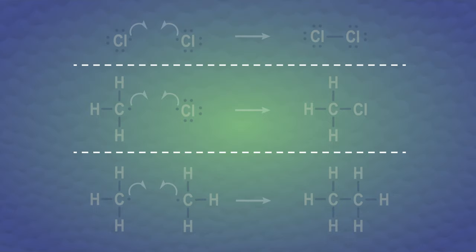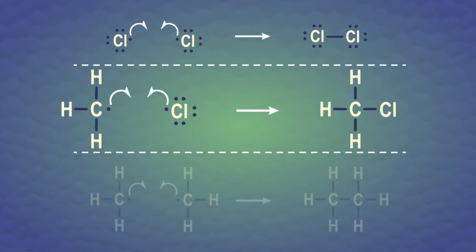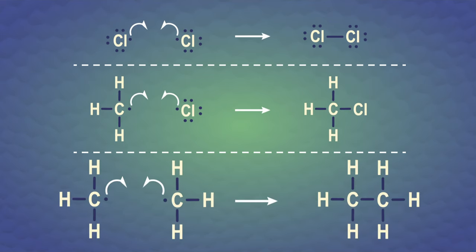Here, there are three possible termination steps. We can end with two chlorine radicals, or instead one methyl radical and one chlorine radical, or two methyl radicals can combine. Radical reactions happen quickly and can create side products, like how two methyl radicals can make ethane when we're trying to make chloromethane.